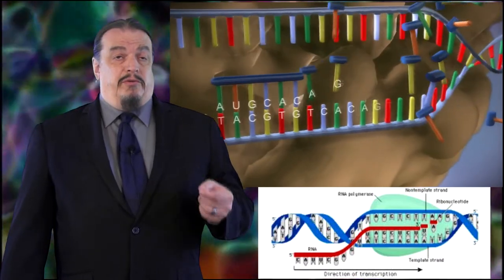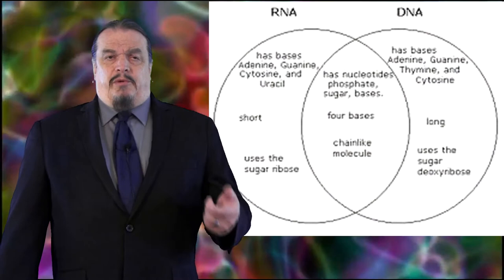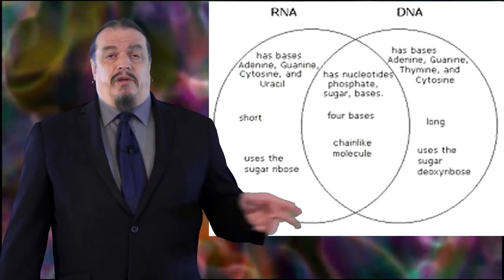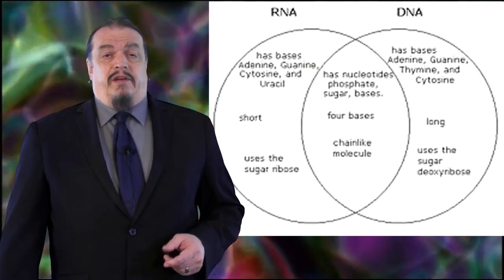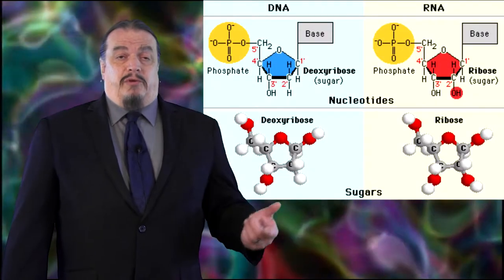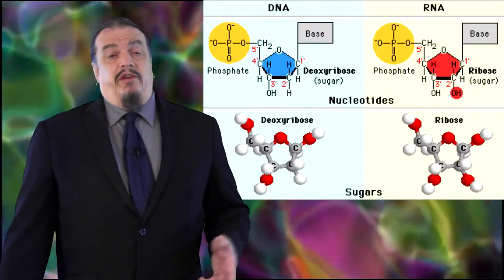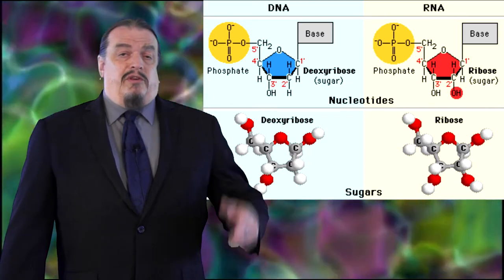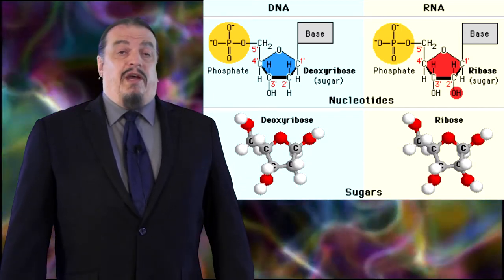In the process called transcription, double-stranded DNA is copied into a single strand of RNA or ribonucleic acid. The names of both RNA and DNA point to another key difference between them, and that is that they use different sugars, ribose and deoxyribose. And the only difference between those sugars is that deoxyribose is missing one oxygen atom that ribose has.